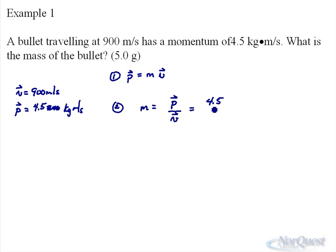4.5 kilogram meters per second divided by 900 meters per second. Notice your meters per second units divide out, so 4.5 divided by 900 gives us a mass of 0.005 kilograms.